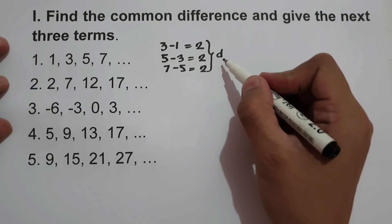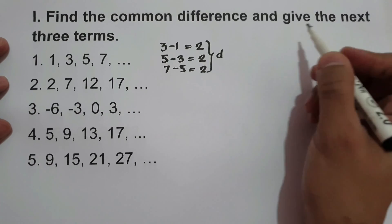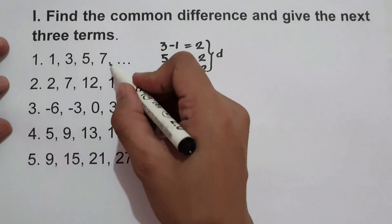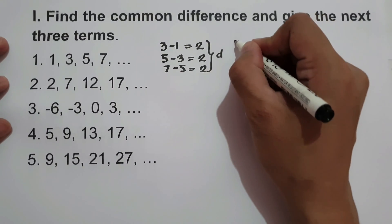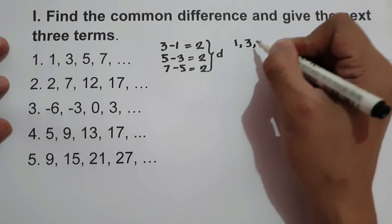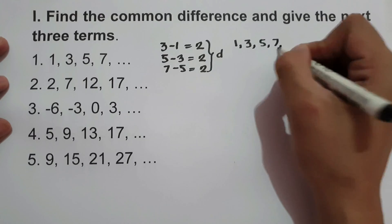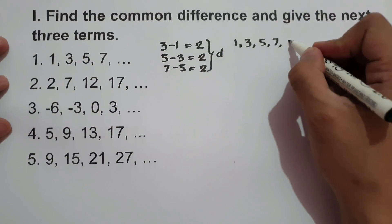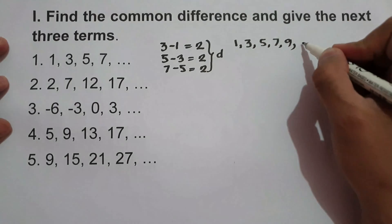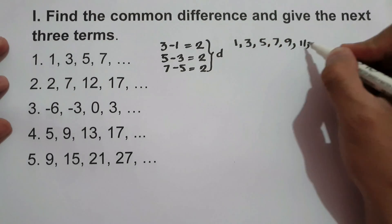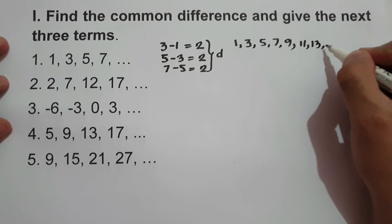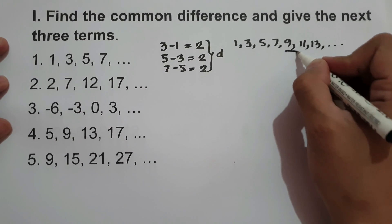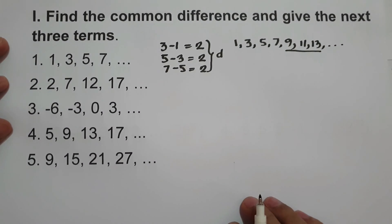The common difference is denoted by d. Now, to find the next three terms, we simply add the common difference to the last term. So we have the sequence 1, 3, 5, 7, and the next three terms are: 7 plus 2 is 9, 9 plus 2 is 11, and 11 plus 2 is 13. So the next three terms are 9, 11, and 13.